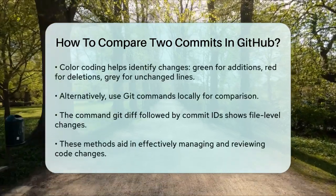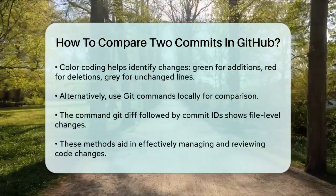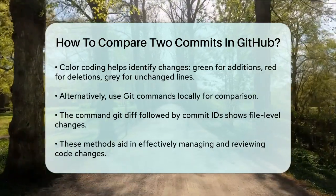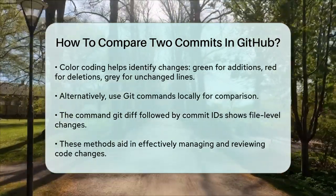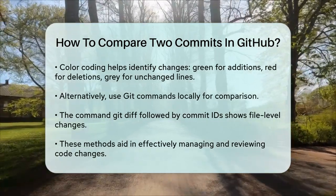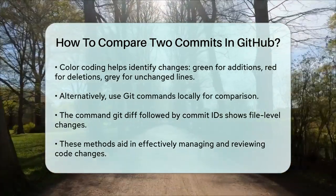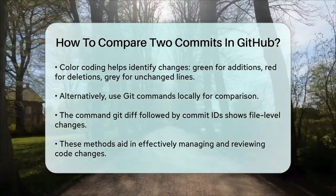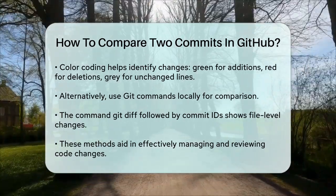Another way to compare commits is by using git commands locally. You can use the git diff command followed by the commit IDs to see the differences. For example, git diff F75C570 3391DCC will show you the changes between these two commits at the file level.